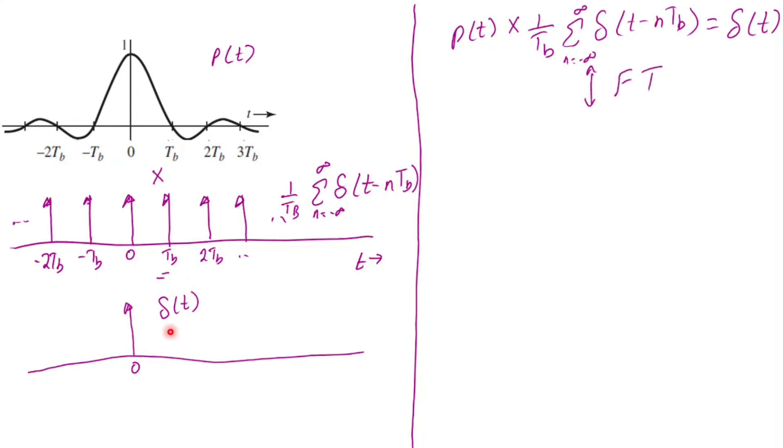So by taking the Fourier transform, 1 over Tb is constant and is unaffected and we have multiple copies of p of f placed at 0 and integer multiple values of Rb. Lastly, the Fourier transform of a delta function is simply 1.